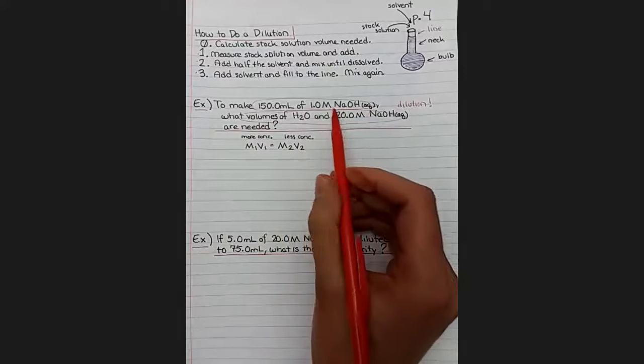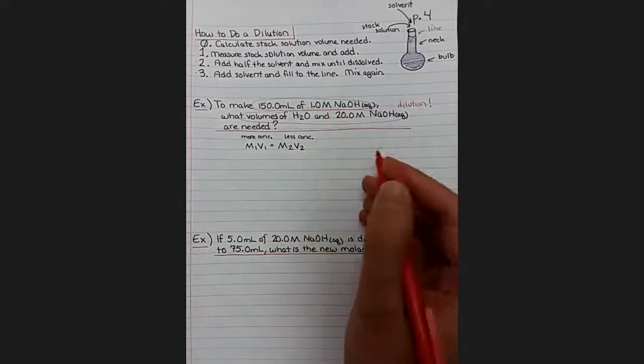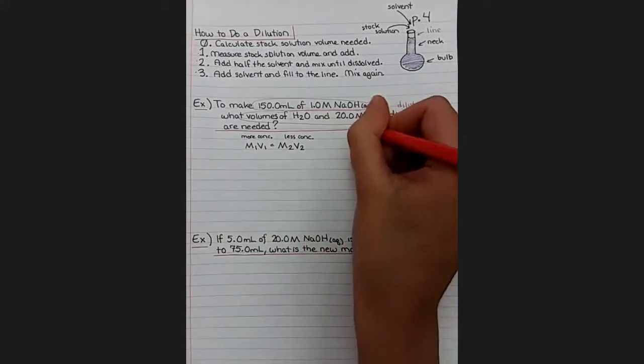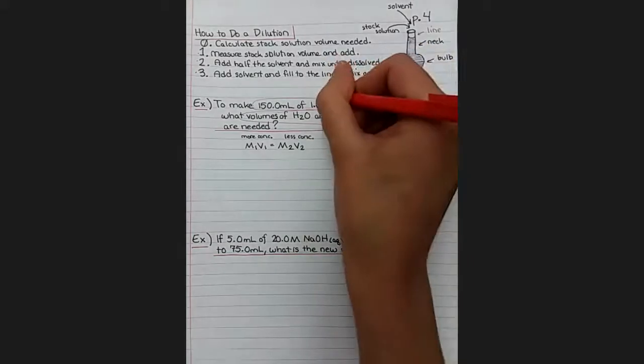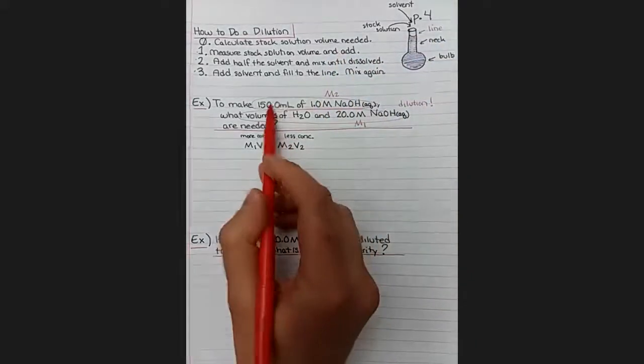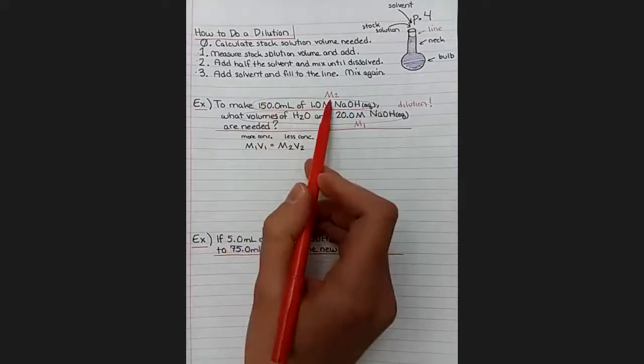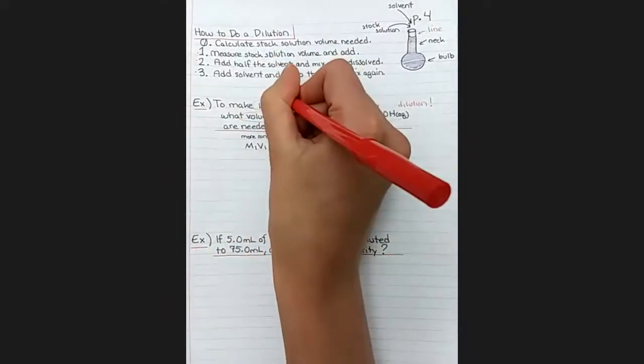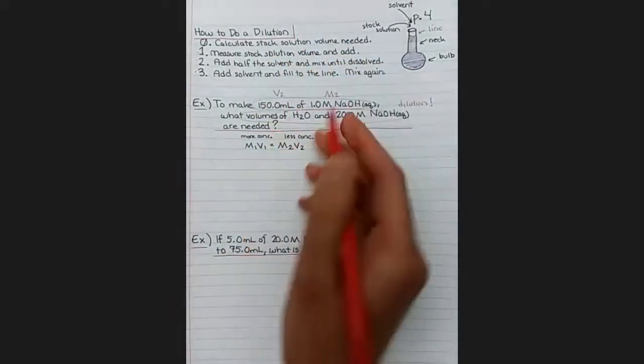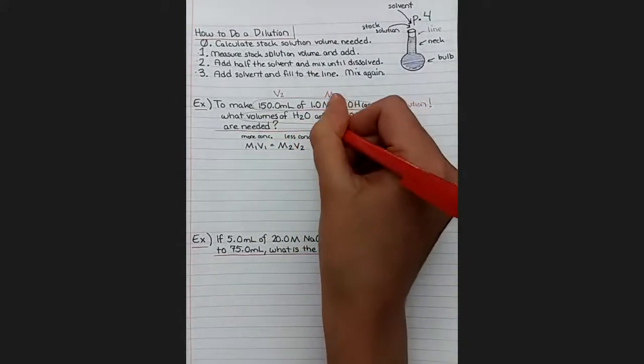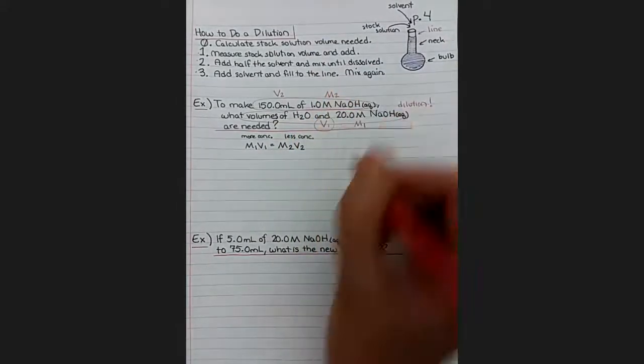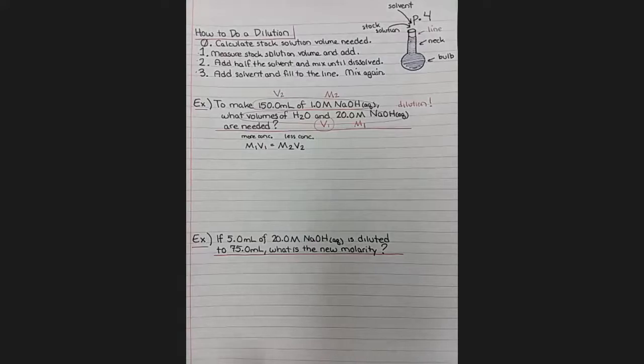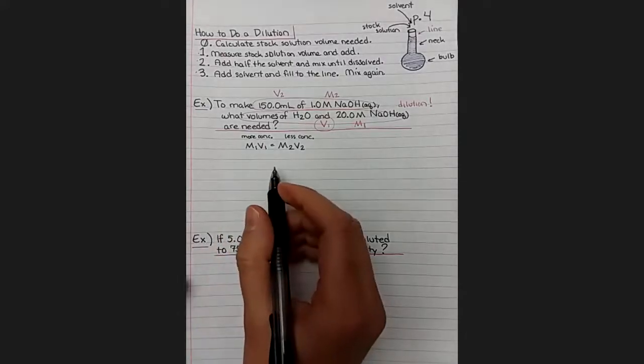So I'm going to say that the M1 and the V1 are going to be the more concentrated solution, and my situation two is going to be the less concentrated solution. So let's see what information we've got. We've got two molarities, a 1 and a 20, so the more concentrated one is going to be my M1, the less concentrated one is going to be my M2. We do have a volume here next to the less concentrated one, so that will be V2, and then we are trying to find V1, trying to find that volume.